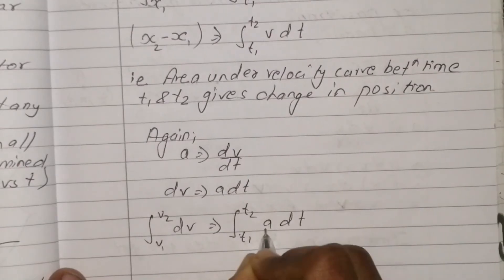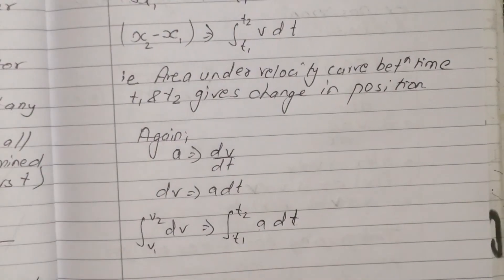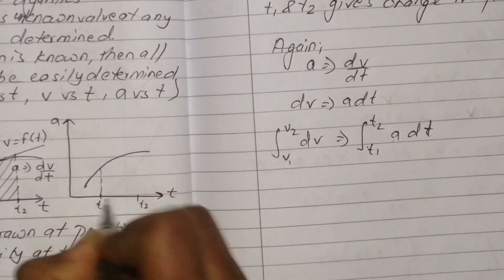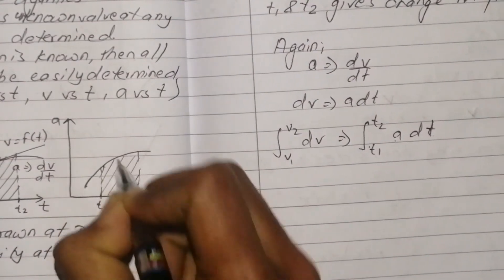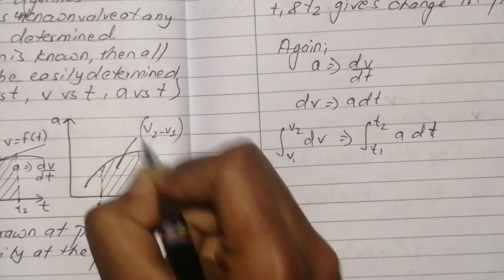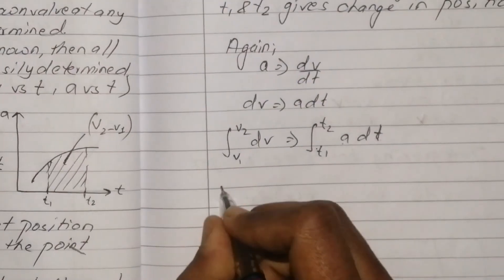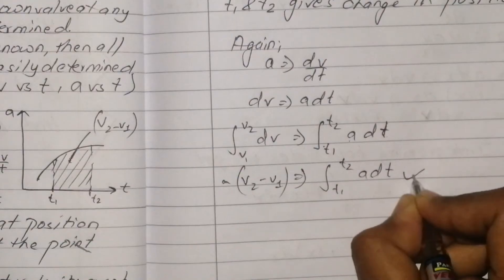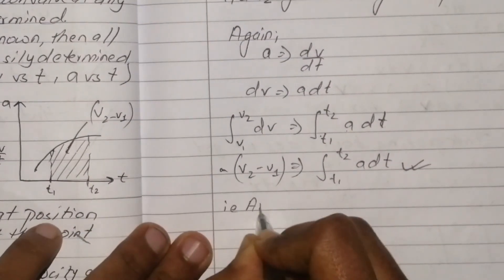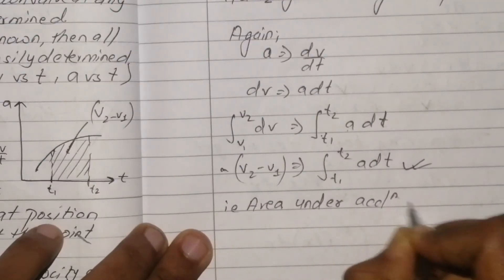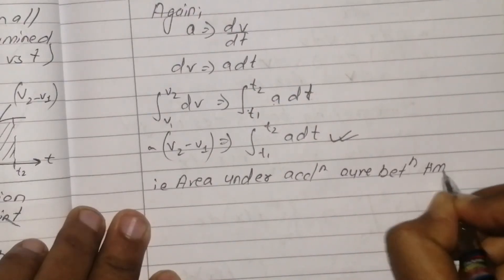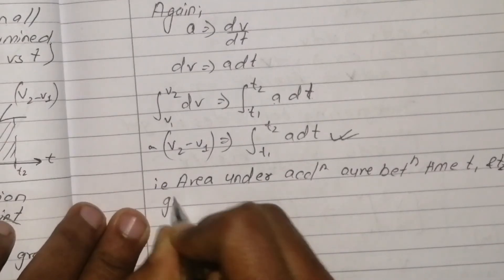The area under the graph from t1 to t2 — the t1 position to t2 position — gives the change in velocity, v2 minus v1. This is equal to the integration from t1 to t2 of a dt. That is, the area under the acceleration-time curve between time t1 and t2 gives the change in velocity.